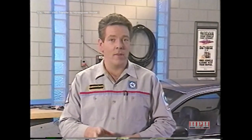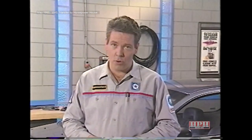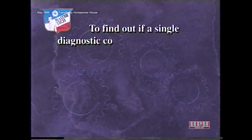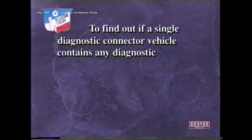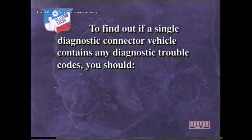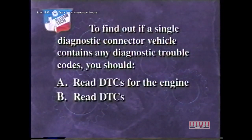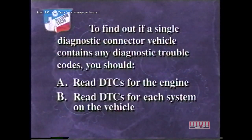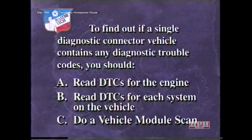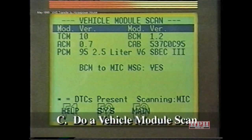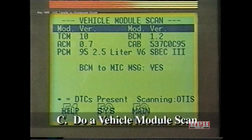Before you stop the tape, try this one last review question: To find out if a single diagnostic connector vehicle contains any diagnostic trouble codes, you should A, read DTCs for the engine; B, read DTCs for each system on the vehicle; or C, do a vehicle module scan. The answer is C. When vehicle module scan is chosen, the DRB3 will look at each module and indicate which ones have trouble codes present.